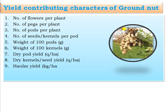The first yield contributing characters are for groundnut. The major yield contributing characters are: number of flowers per plant, number of pegs per plant, number of pods per plant, number of seeds or kernels per pod, weight of 100 pods in grams, weight of 100 kernels in grams, dry pod yield in quintals per hectare, dry kernel or dry seed yield in quintals per hectare, and haulm yield in kg per hectare. These are the major yield contributing characters that indicate the final yield of groundnut.